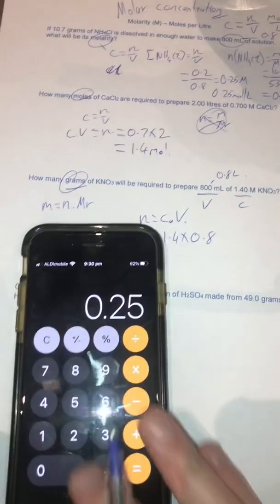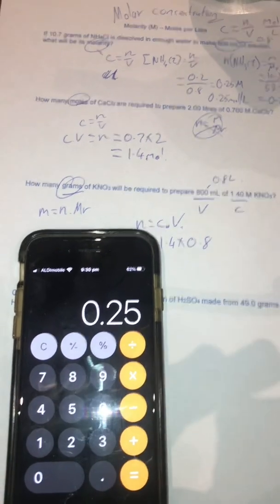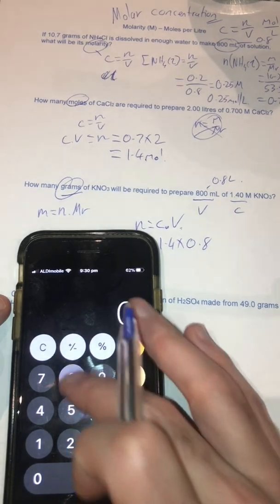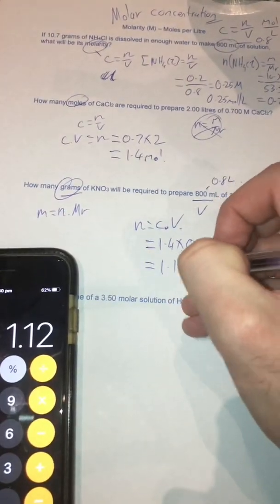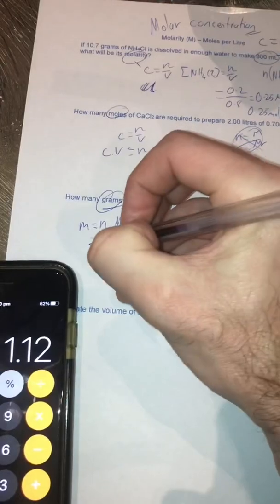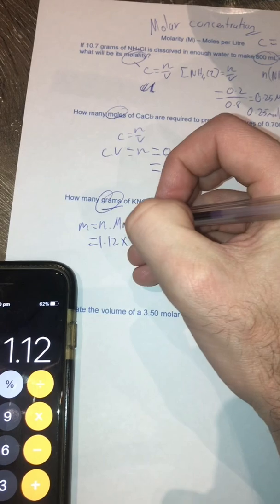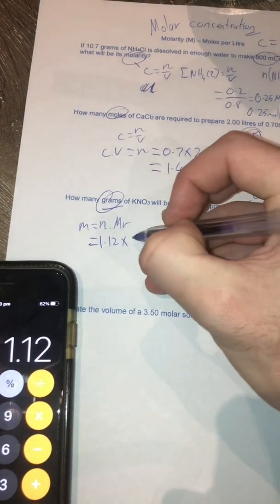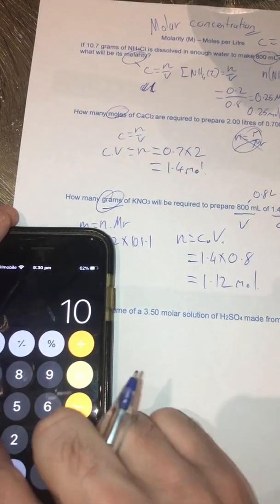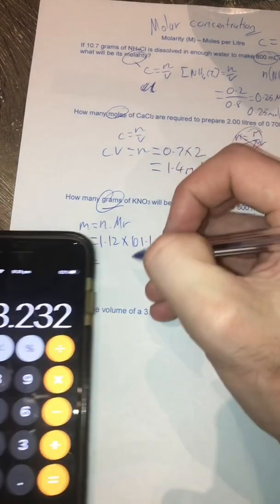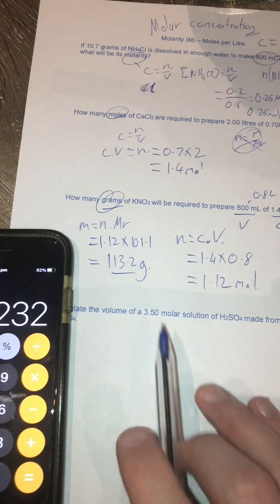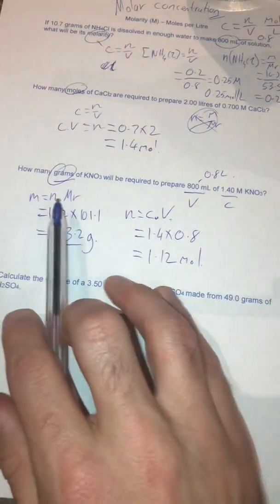And I go back here and go, whoops, let's just try to study that. 1.4 times 0.8 gives me 1.12 and that's mole. So therefore, to find my mass, 1.12 times my molar mass, which is 101.1. And that's going to be equal to times 101.1 gives me 113.2 grams.